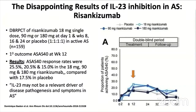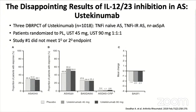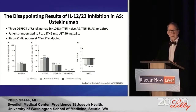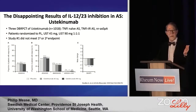Here we have the results of a small phase 2 trial in ankylosing spondylitis with risankizumab, a p19 IL-23 inhibitor — completely flat, no difference from placebo. And here we have a trial with ustekinumab. There was a 20-patient open-label study done in Germany that appeared to show great response to ustekinumab in ankylosing spondylitis, but the subsequent big phase 3 study showed no difference from placebo.